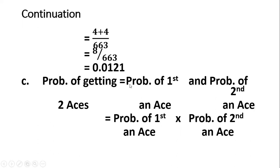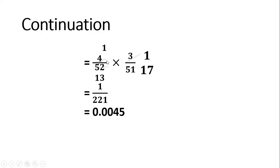For part C, probability of getting two aces: that means first an ace and second an ace. Probability of first ace is 4/52, which is 1/13. The second ace — because you are not replacing the card — the number of aces reduces from 4 to 3, and total cards reduce to 51, so that's 3/51 which is 1/17. Multiplying 1/13 by 1/17 gives 1/221, and the answer is approximately 0.0045.